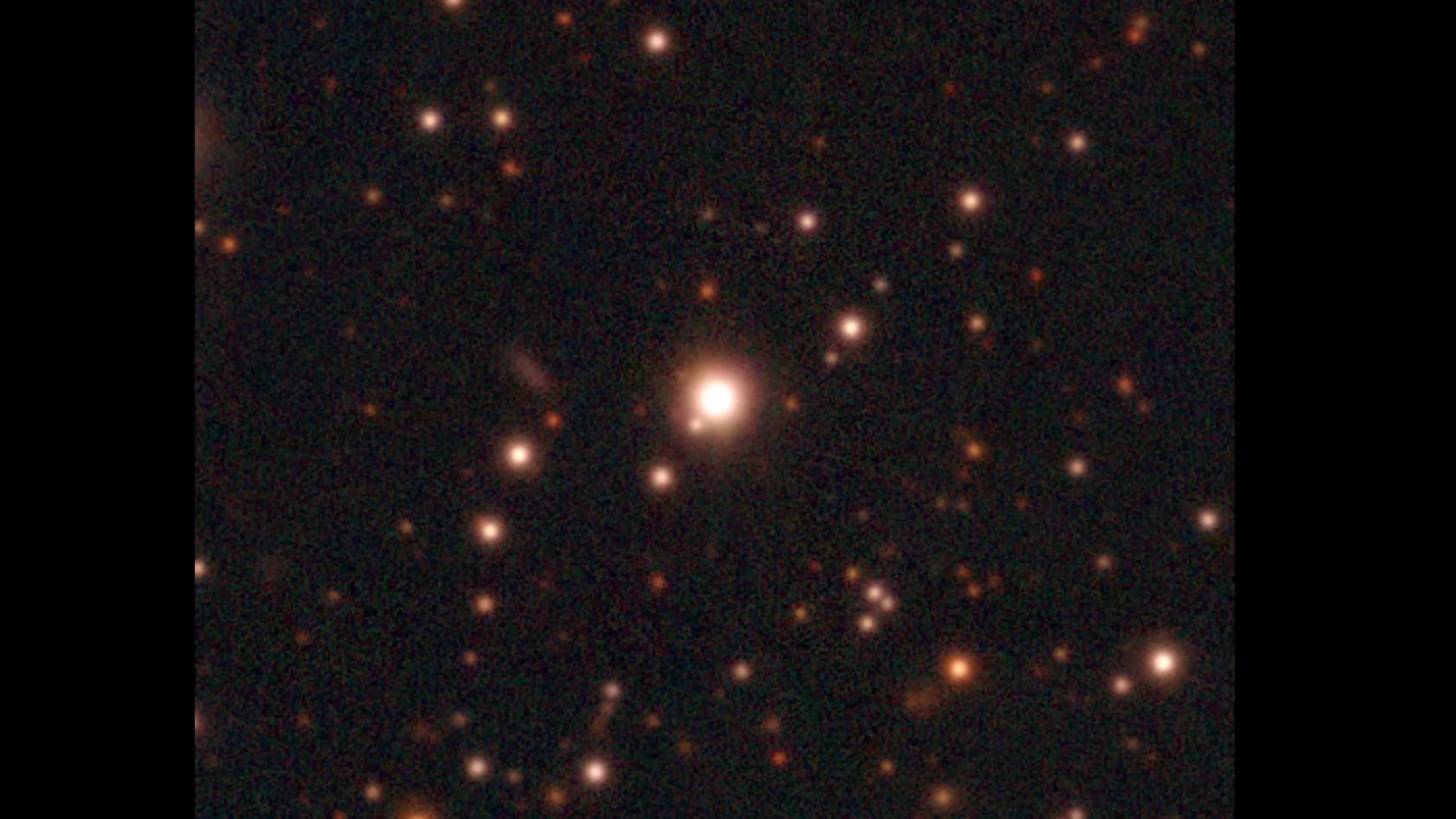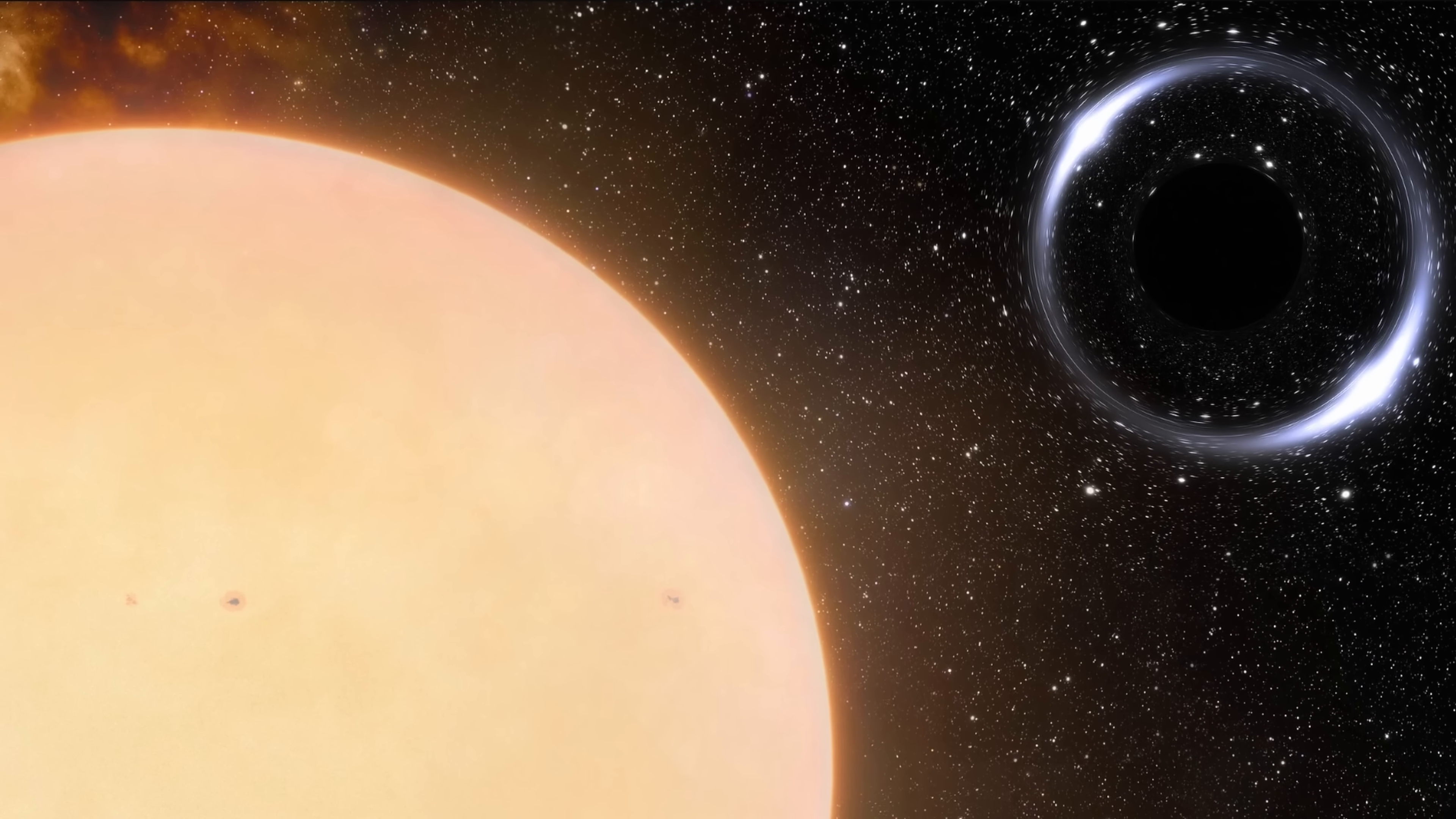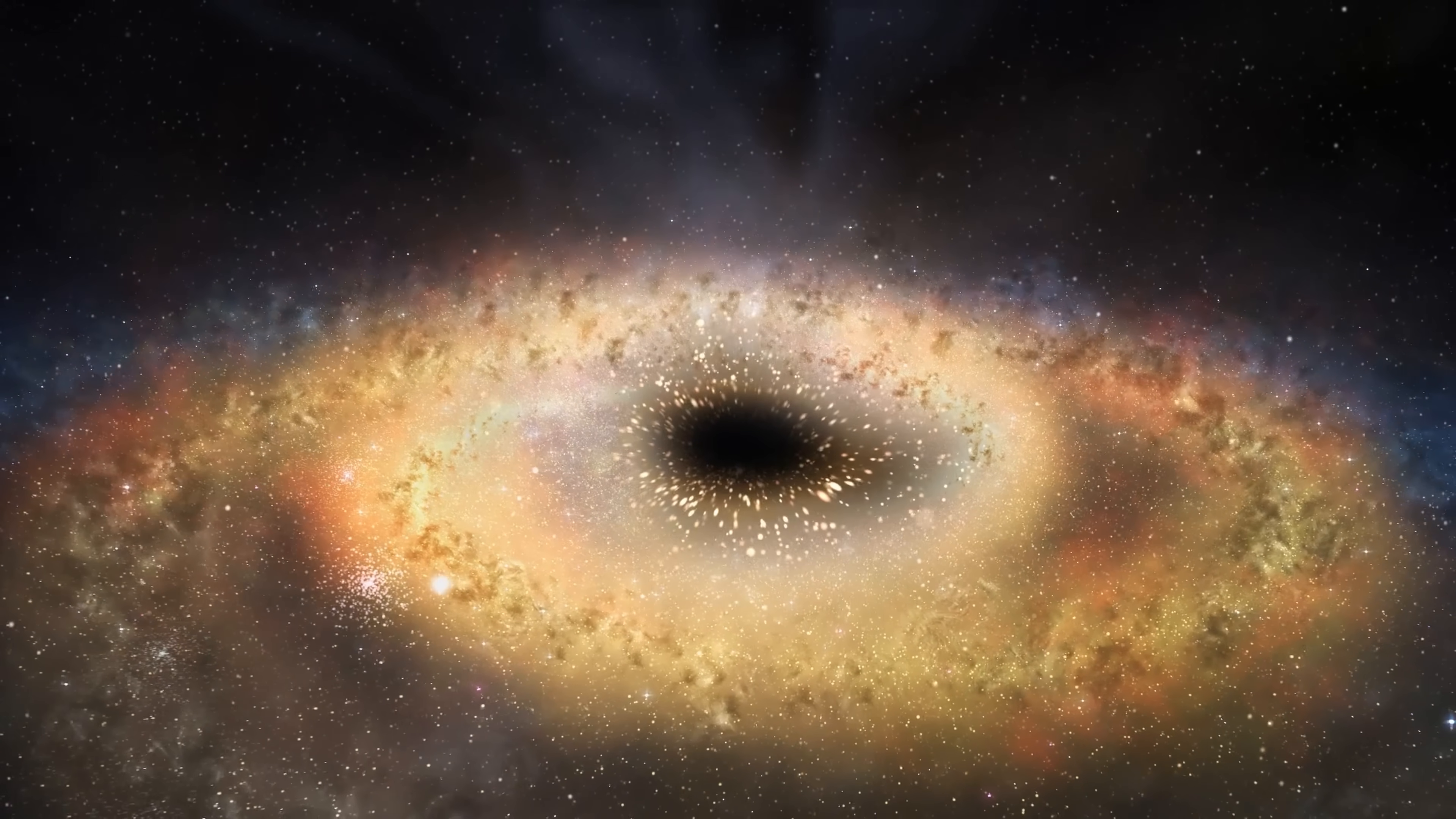A few years back we had our first discovery, Gaia BH1, the first dormant black hole discovered by Gaia orbiting a distant star. Within just a couple of years, three such black holes have been confirmed by Gaia, all dormant, all invisible, and all with somewhat unusual masses. The latest one, Gaia BH3, seems to be one of the strangest, essentially containing one of the largest stellar mass black holes ever found at 33 solar masses.